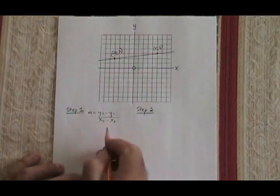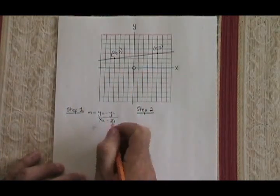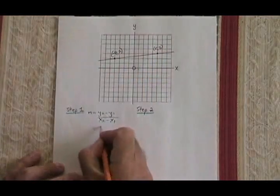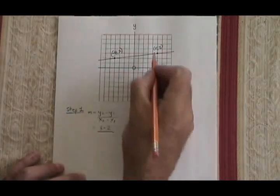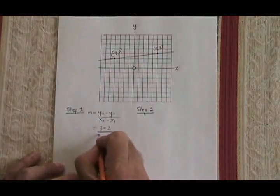So filling in this formula, I end up with y2 minus y1 becomes 3 minus 2. x2 minus x1 becomes 5 minus negative 4.